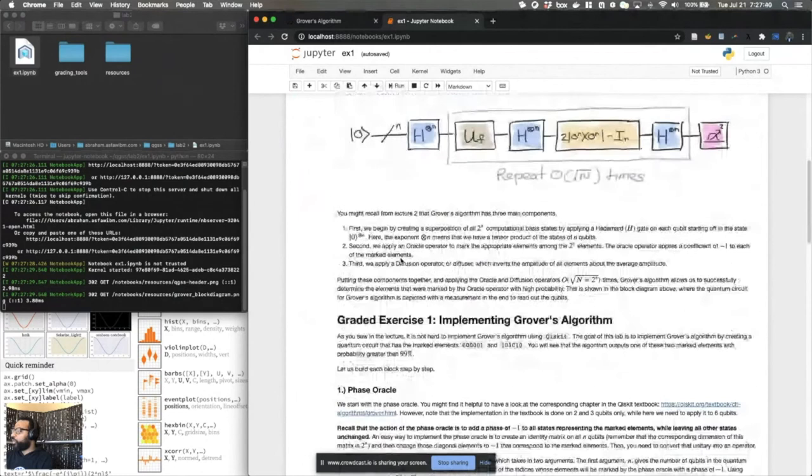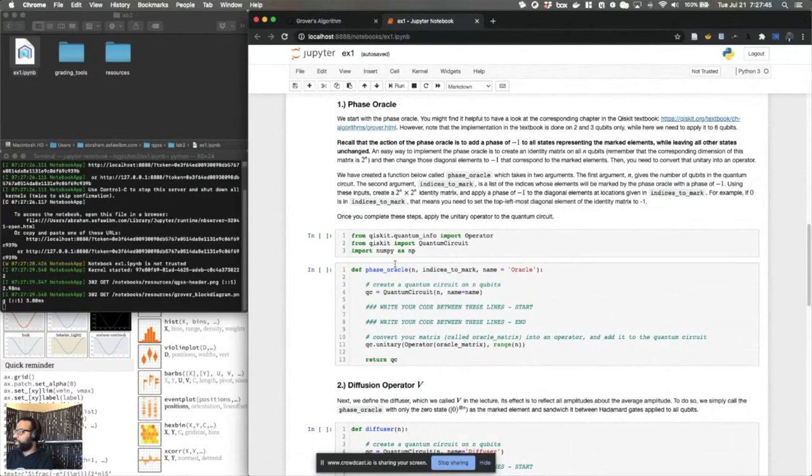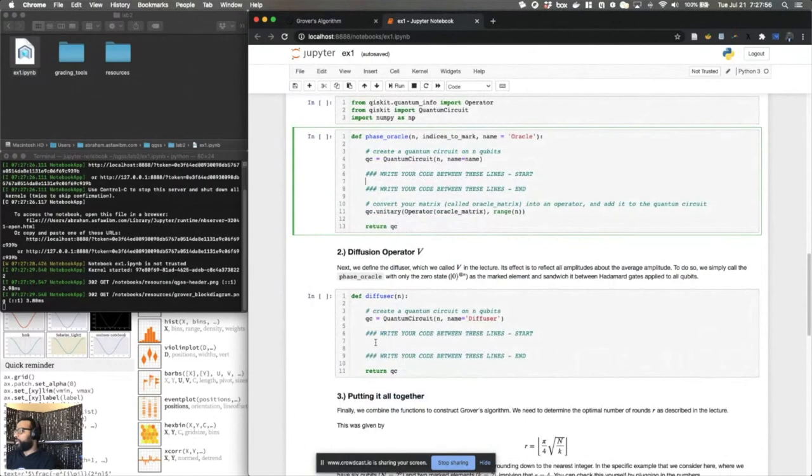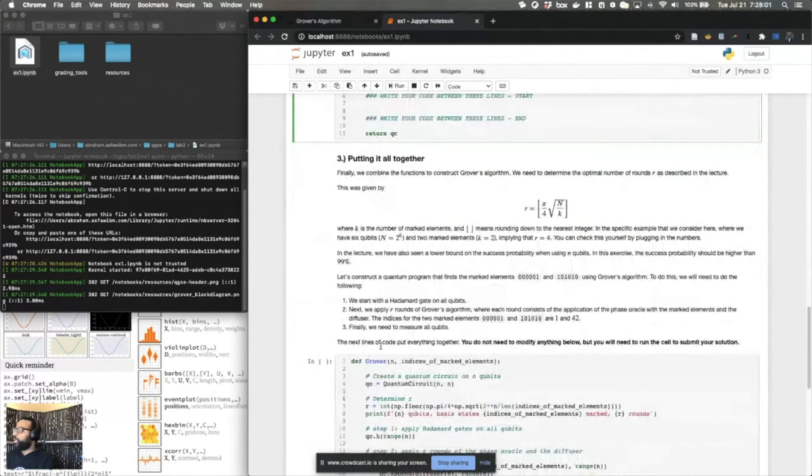You're going to build the pieces of Grover's algorithm that make it work. So here's the phase Oracle, for example, where you're going to build the code for the circuit, the matrix that makes the phase Oracle work. And then here's the diffusion operator where you're going to write out the code that builds out that matrix. Eventually, we help you put it all together.